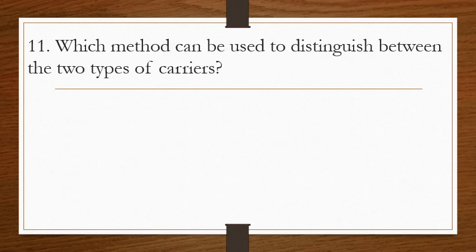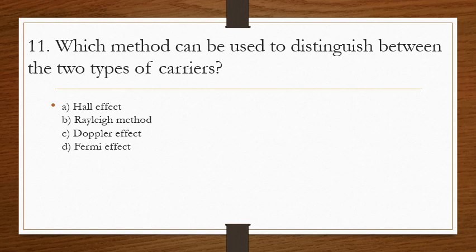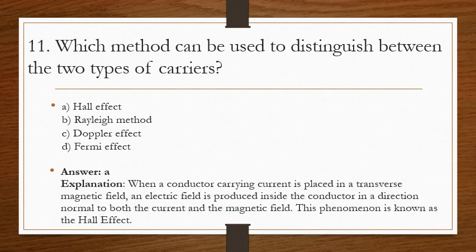Question 11: which method can be used to distinguish between the two types of carriers? The answer is A. When a conductor carrying current is placed in a transverse magnetic field, an electric field is produced inside the conductor in a direction normal to both the current and the magnetic field. This phenomenon is known as the Hall effect, which is used to distinguish between types of charge carriers.